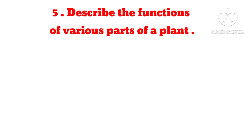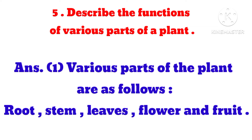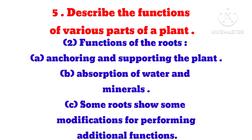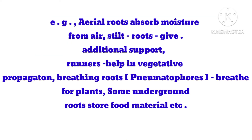Question 5: Describe the functions of various parts of a plant. Answer: The various parts of the plant are: root, stem, leaves, flower, and fruit. Functions of the roots: A. Anchoring and supporting the plant. B. Absorption of water and minerals. C. Some roots show modification for performing additional functions — aerial roots absorb moisture from air; stilt roots give additional support; runners help in vegetative propagation; breathing roots (pneumatophores) help plants breathe; some underground roots store food material.